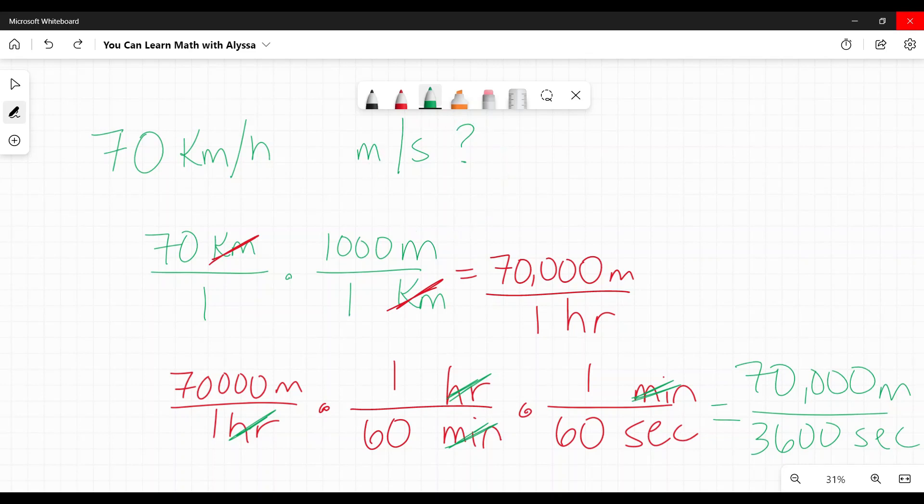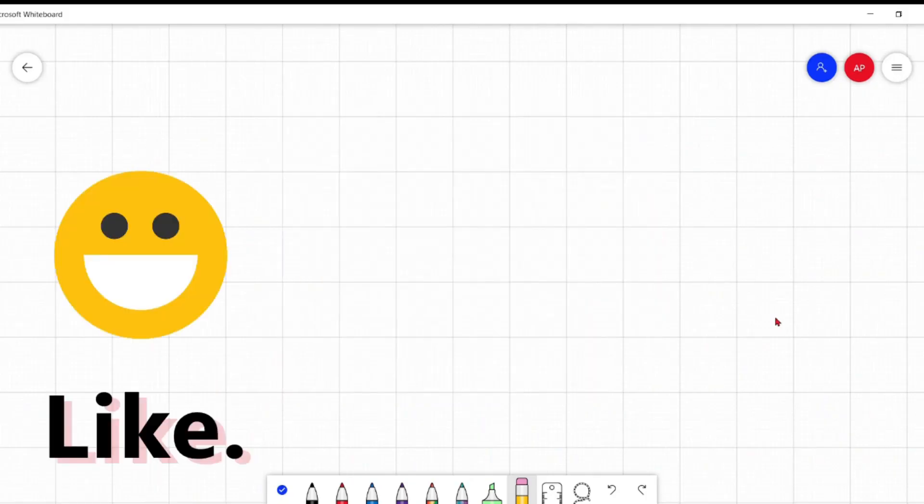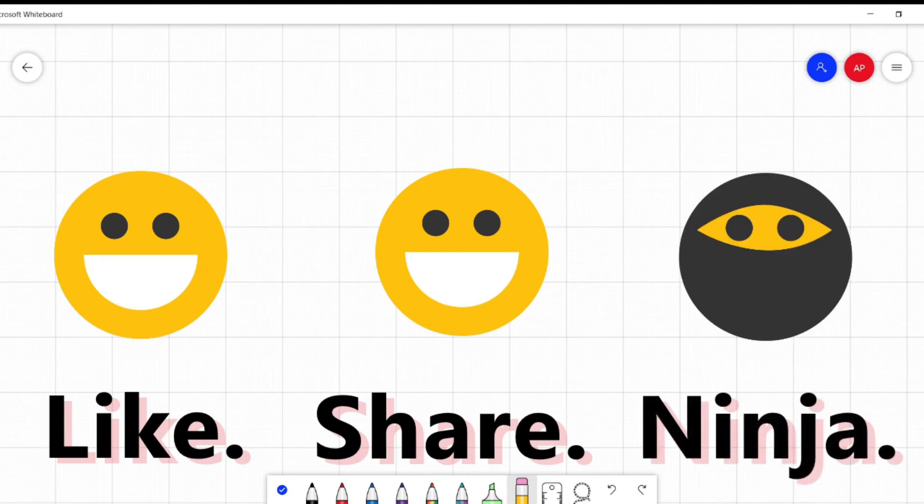So 70,000 divided by 3,600 gives me 19.4 repeating, or if we want to round that to just 19.44, and that is meters per second. And that is my answer. I've converted it. If this was helpful or useful in any way, please like, share, subscribe. You know the drill. Thank you so much for stopping by. Hope you have a great day. See you later. Bye.